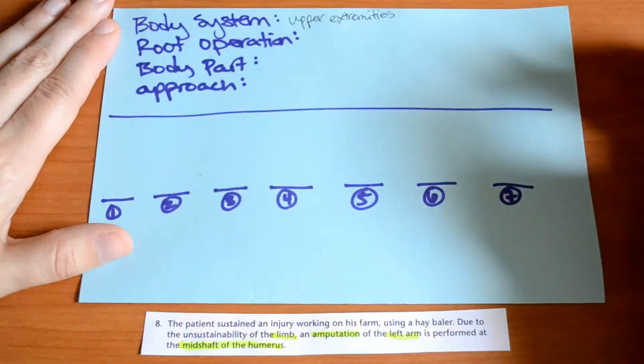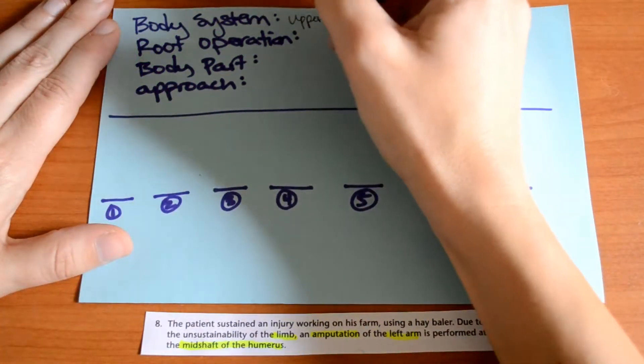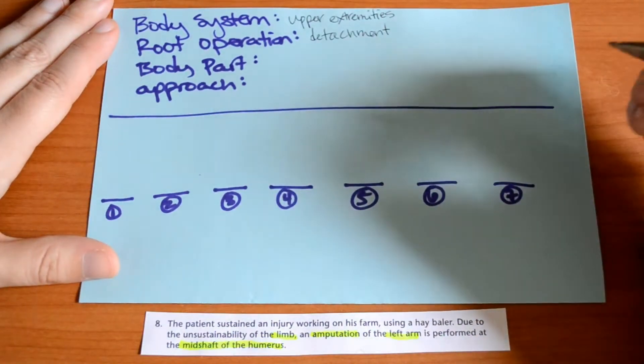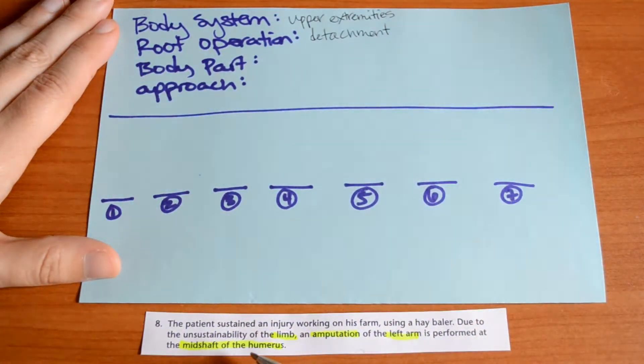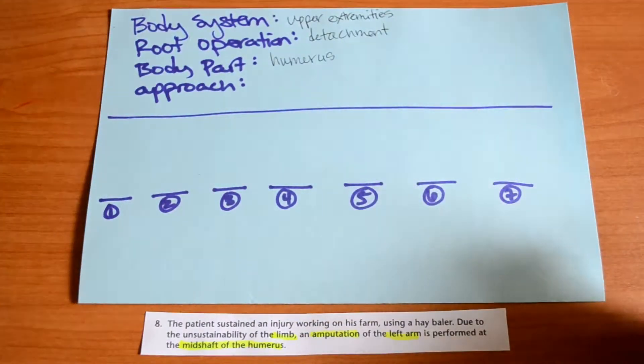In the upper extremities, we know that the root operation is detachment because they clearly said amputation. The body part specifically where the amputation happened was the mid-shaft of the humerus. So we can say humerus. And then with all detachments, the approach is open.